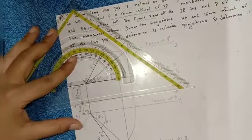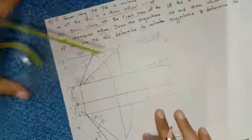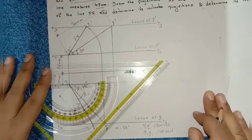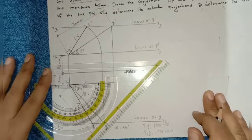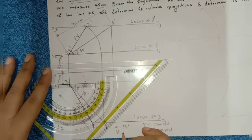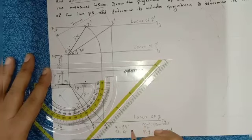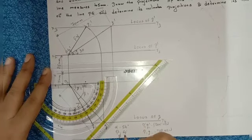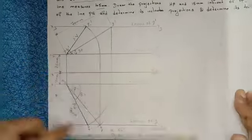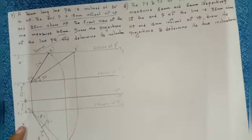Determine the inclinations. Measure alpha — I got alpha equal to 54 degrees. Measure beta — I got beta equal to 60 degrees. And pi — I got pi equal to 49 degrees. This completes problem seven.